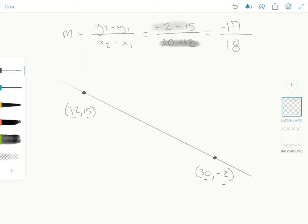So, the slope is nearly negative 1. The slope is negative 17/18ths.